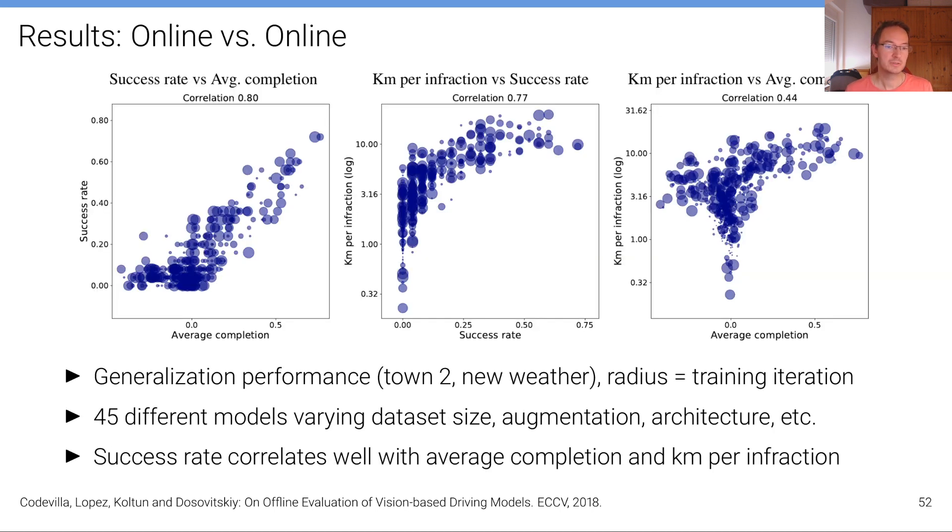And so what they found in this paper is that online metrics themselves are mostly well correlated with high correlation scores. So for example here is success rate with respect to average completion where 45 different models with varying dataset size, augmentation techniques, architectures, etc. have been compared. So each of these models is a data point on this plot.